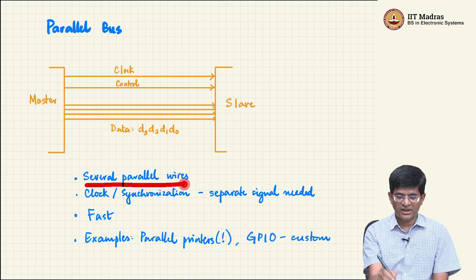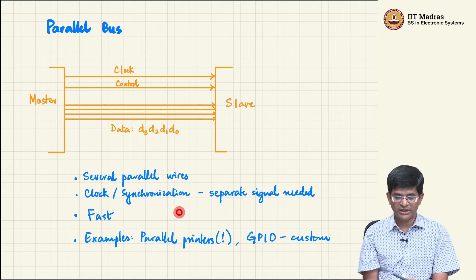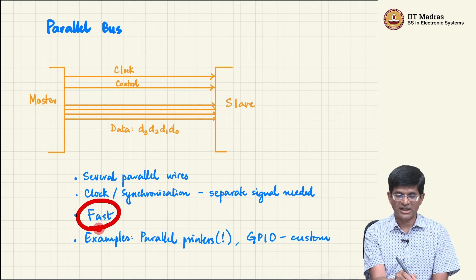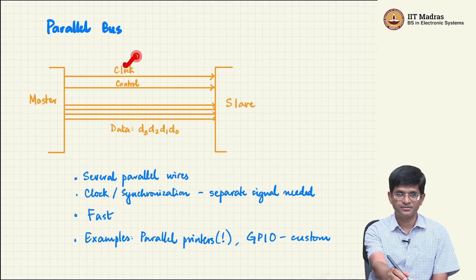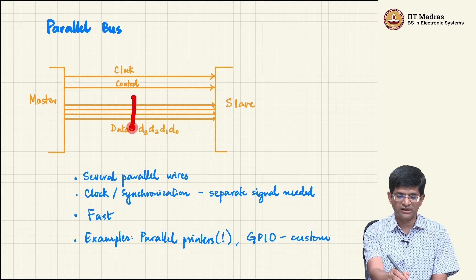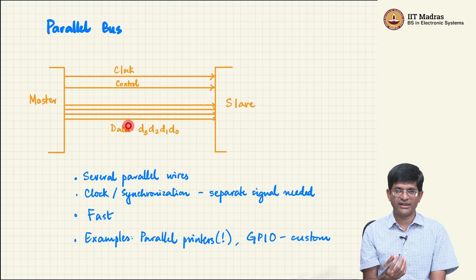You could have several parallel wires and you need some kind of clock synchronization. The one good thing about it is in general it is going to be fast. And why do I say fast? Because on every tick of the clock I am going to transfer in this case 4 bits. So it is clearly a fairly efficient way of transferring data.